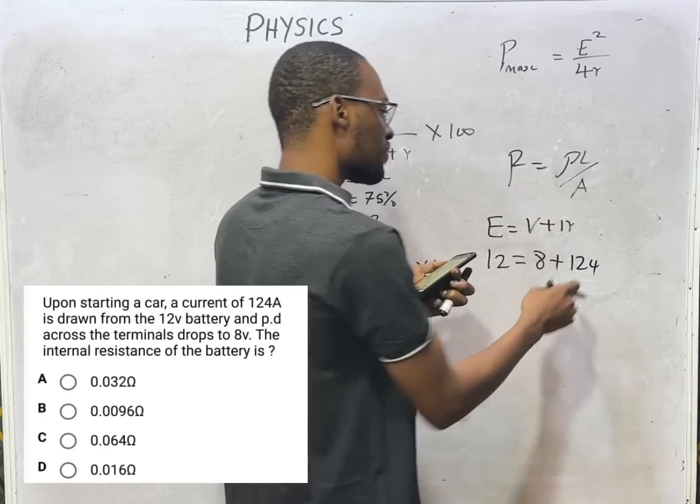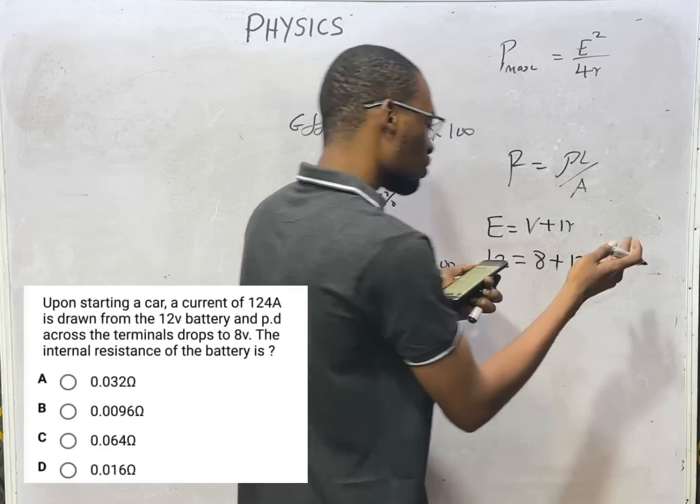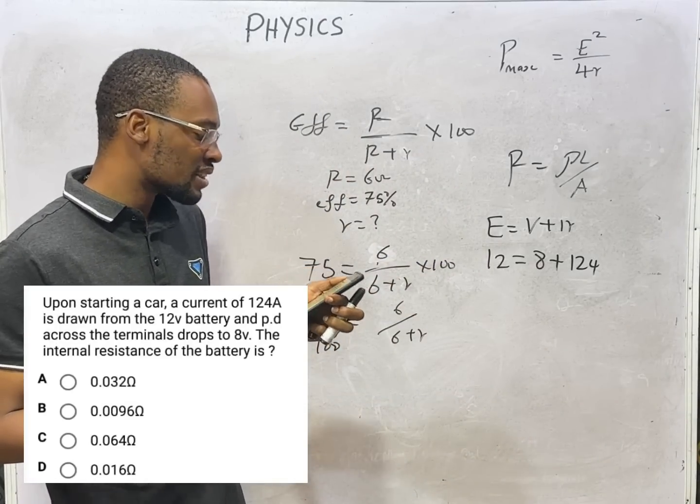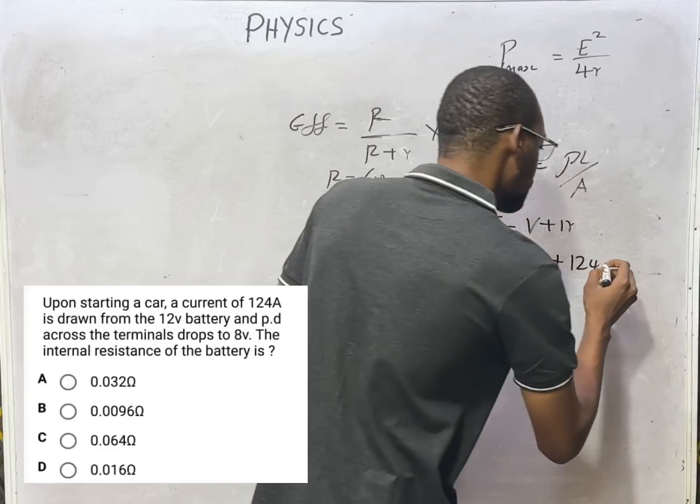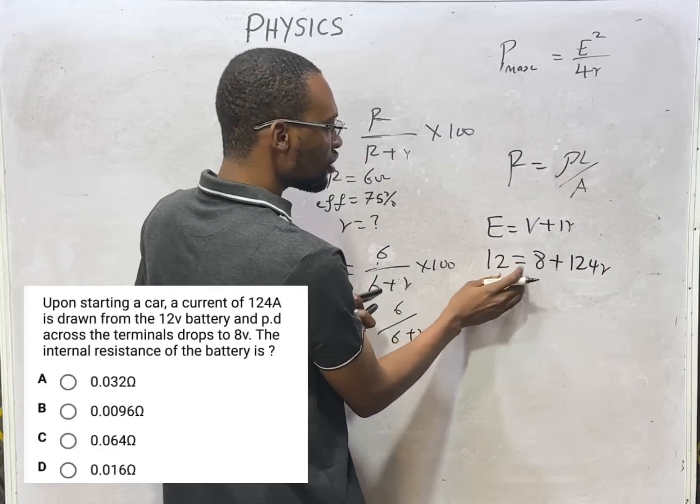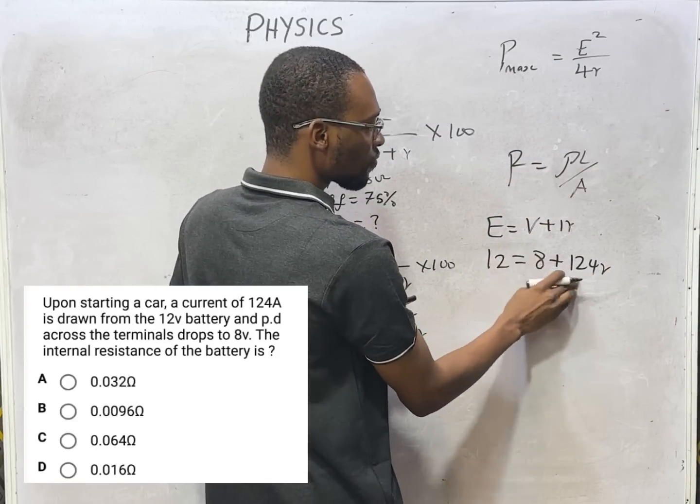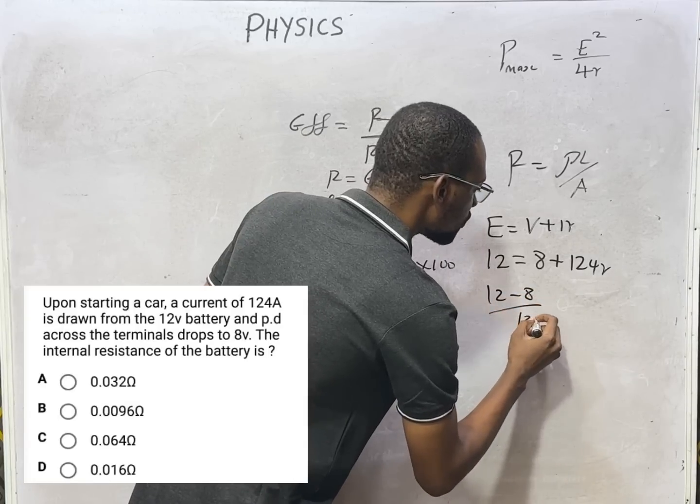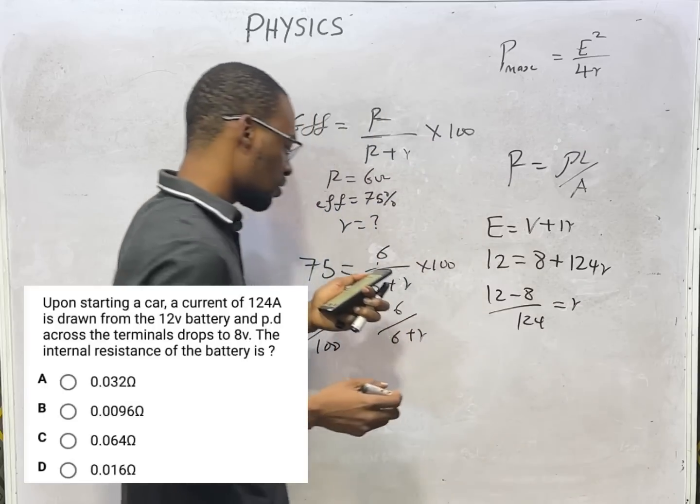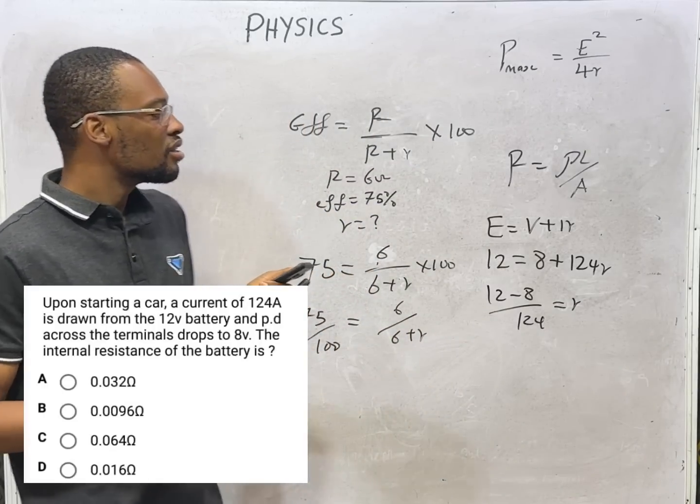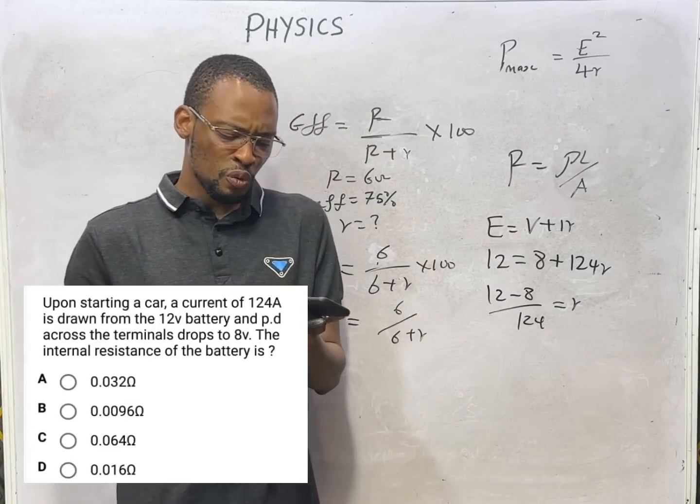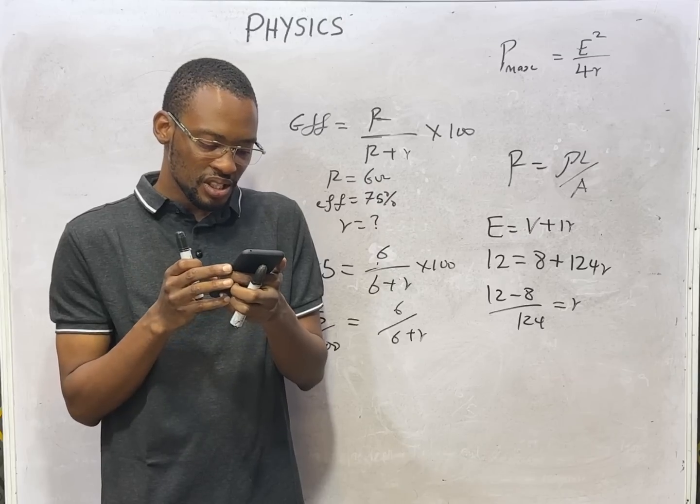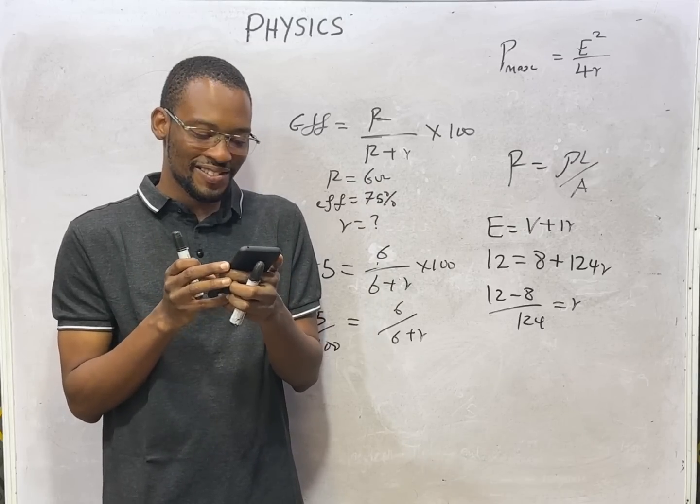So 8 plus, the current is 124 amps, times resistance. We don't have the internal resistance, that is what we are looking for. So E = V + Ir, so (12 - 8)/124 equals r. That will be your answer to this question. With this we come to the end of this episode. See you in the next episode where we shall continue solving questions.